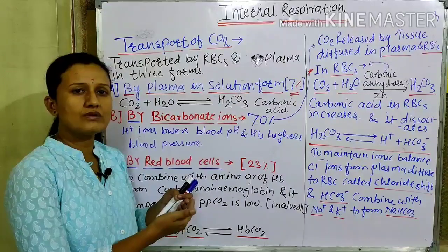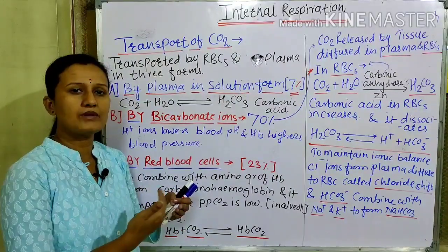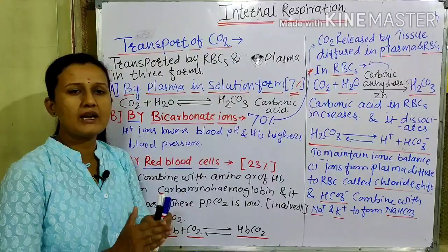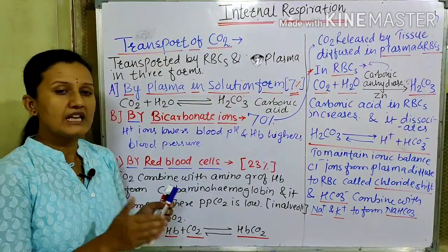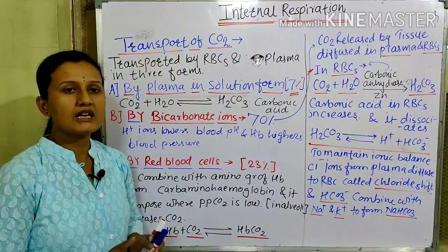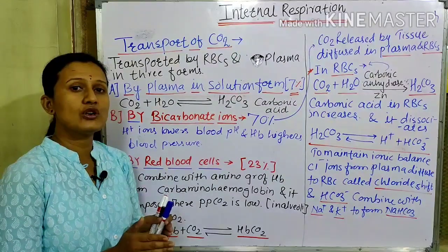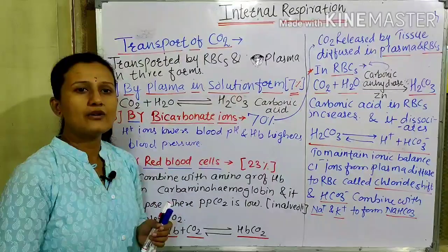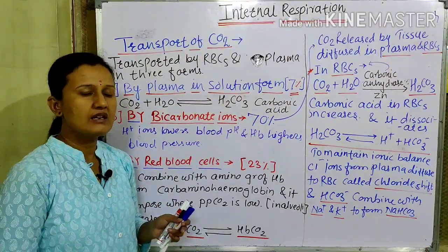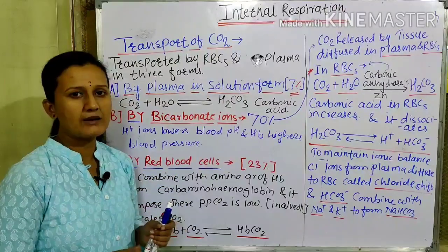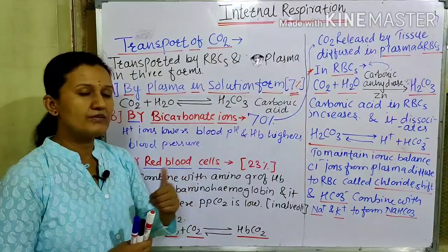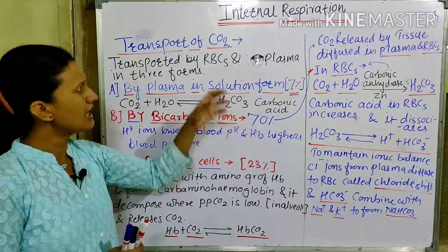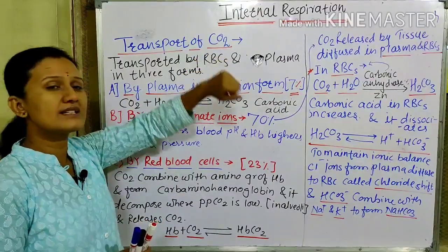We already saw that after O2 enters the alveolar sac, how does it diffuse according to concentration into the blood capillaries? How does it join with hemoglobin? When partial pressure of oxygen is higher, it quickly joins with hemoglobin. Then how it is transported through the RBCs and gets delivered to each and every cell of the body. Now let us see how CO2 is transported.